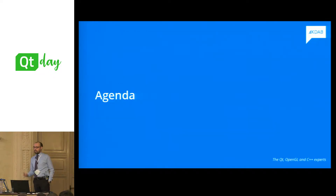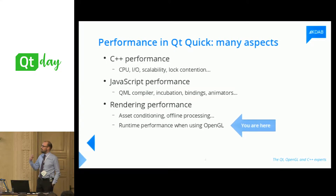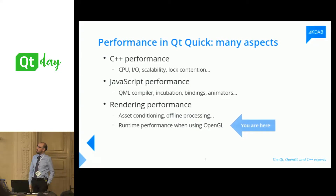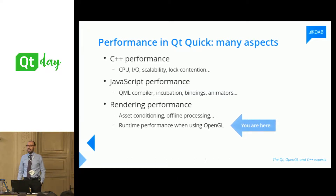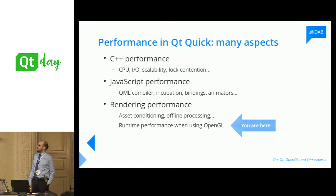The thing I want to discuss today has to do with the performance of Qt Quick 2 rendering. When we talk about Qt Quick performance, we can talk about many angles — C++ performance or JavaScript performance. I want to focus, because I have only one hour, about rendering performance, and specifically about the runtime performance of Qt Quick when using OpenGL. There is also something to be said about asset conditioning and offline processing, but I'm not touching that today.